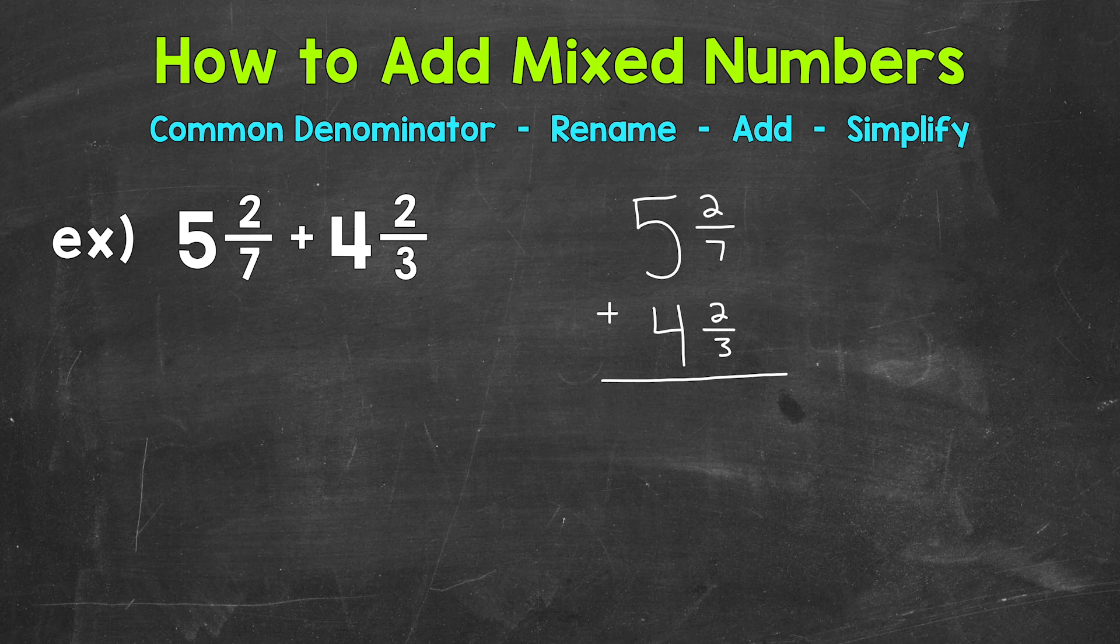So we'll start with 5 and 2 sevenths plus 4 and 2 thirds. So once we do that, we need to find a common denominator. We're not able to add because we have a 7 and a 3 for our denominators.